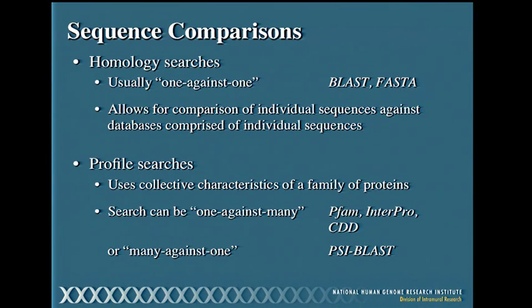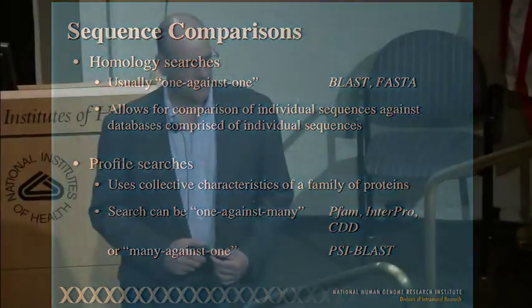Question from the audience: since CDD combines multiple databases, why not just start there and go to the individual databases only if you need specific information? The answer is that the search algorithms are different in each place, and each has different collections of databases. In this particular sphere, there's not one that has everything and uses the best method. You should still be searching multiple websites—it's not about following a decision tree, it's about covering all your bases.